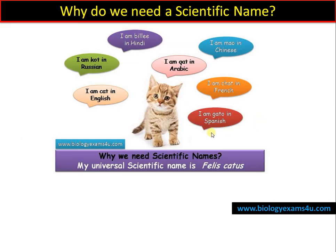Let's take an example of this beautiful cat. In Arabic, this cat is called Quad; in Chinese it's Mao; in Hindi it is Billy; in Russian it is Got. So the same organism is called by different names in different languages and different countries. Sometimes even within a country, in different localities, the name of this particular organism may differ.